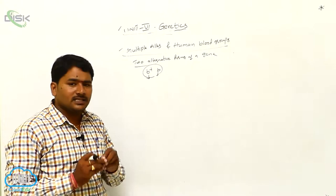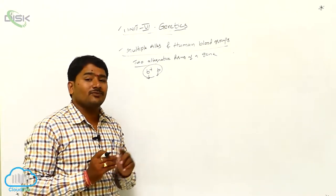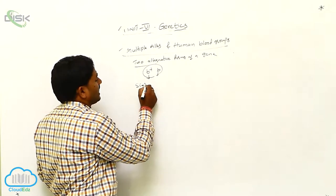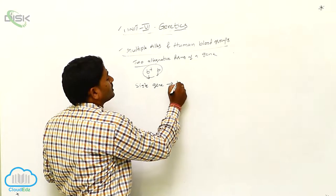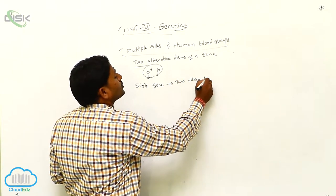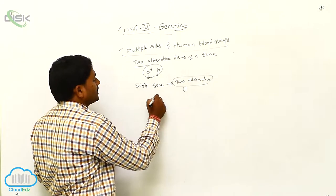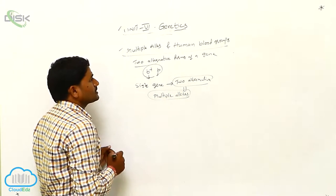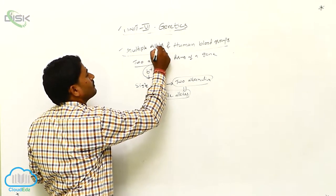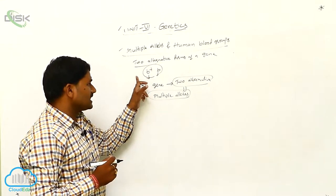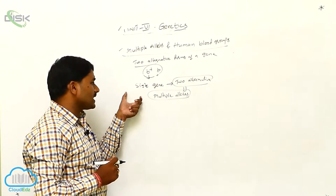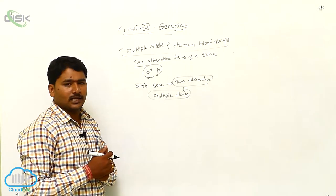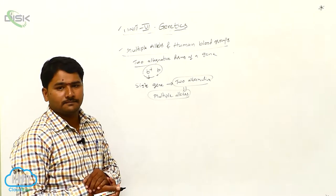But this is not correct always. Sometimes, a single gene has more than two alternative forms. When a single gene has more than two alternative forms, those are called as multiple alleles. This phenomenon is called as multiple allelism.